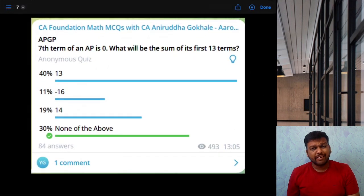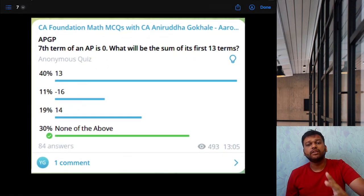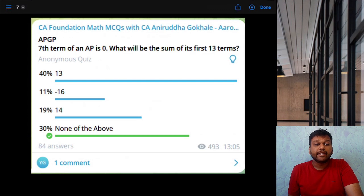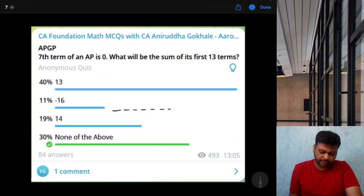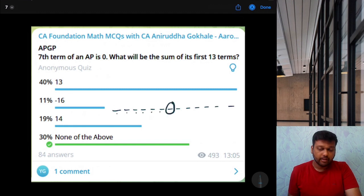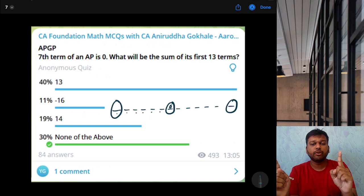Next. Seventh term of an AP is 0. What will be the sum of first 13 terms? This is an arithmetic progression. Let's say that there are 13 terms. Seventh term is in exactly middle because 13 plus 1 by 2, 14 by 2 is 7. So exactly middle term is 0. We know that in arithmetic progression, middle term is the arithmetic mean of extreme terms. That means, these two terms, if we take arithmetic mean of extreme terms, it will be 0.